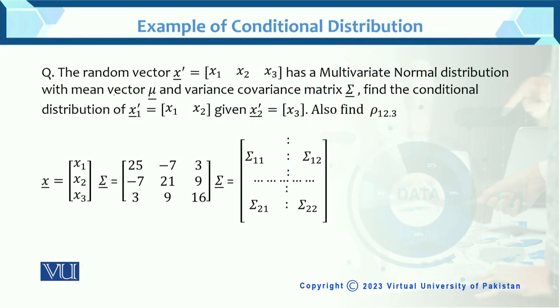The question is, the random vector x, which equals x1, x2, x3, this is three dimension, has a multivariate normal distribution with mean vector mu and the variance covariance matrix sigma. Now, find the conditional distribution of x1 given x2 and also find the partial correlation.